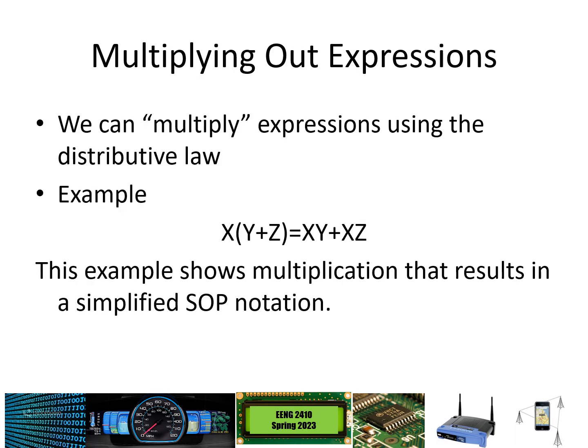So how can we simplify some expressions? The first thing we can do is multiply out expressions using the distributive property. If we had x AND (y OR z), we could distribute the x to the y and to the z and end up with xy OR xz. What we've done is transformed from a product of sums to a sum of products.